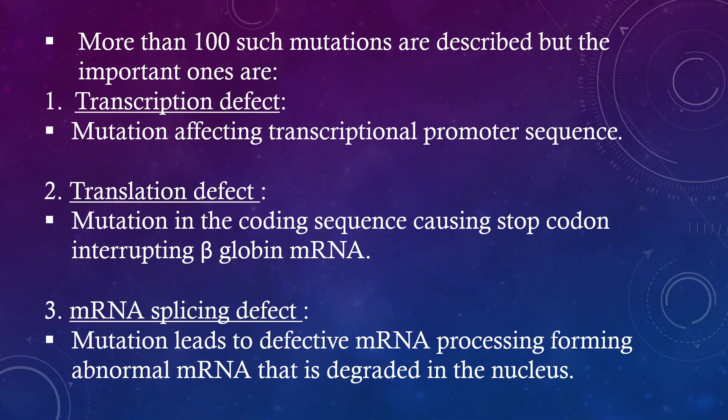More than 100 such mutations are described, but the important ones are: transcription defect — mutation affecting transcriptional promoter sequence; translation defect — mutation in the coding sequence causing a stop codon interrupting beta-globin mRNA; and mRNA splicing defect — mutation leads to defective mRNA processing, forming abnormal mRNA that is degraded in the nucleus.